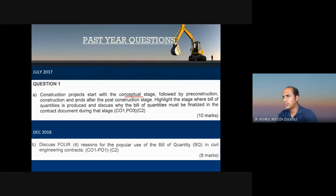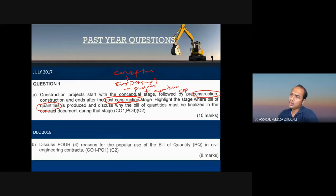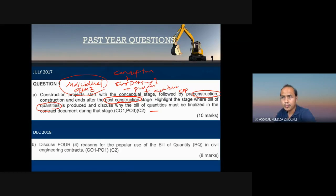The construction project life cycle starts with the conceptual stage, followed by pre-construction — which includes engineering and design, and procurement — and ends after the post-construction stage, which includes the operation stage. The second question asks you to highlight the stage where the bill of quantity is produced and discuss it. Submit as your individual quiz. Individual quiz is 10% total — I will give several quizzes. Submit through Google Classroom.